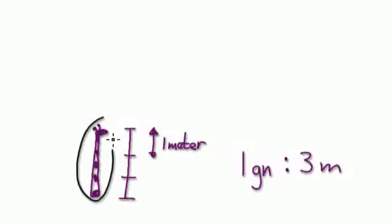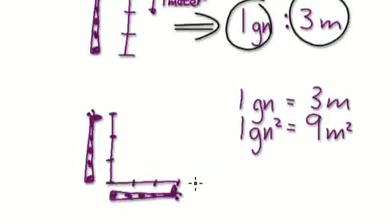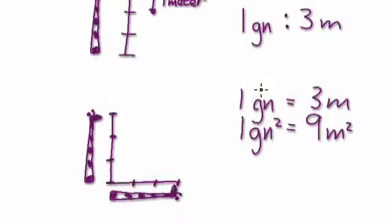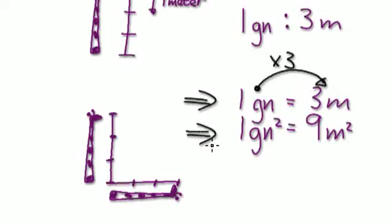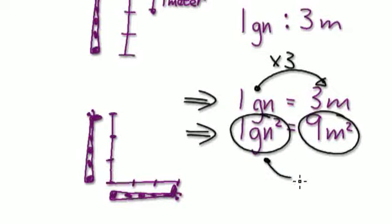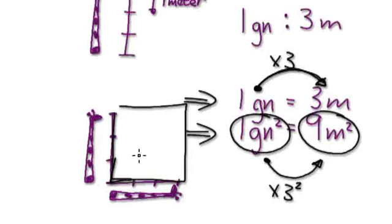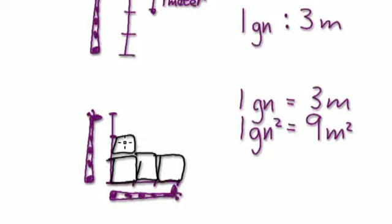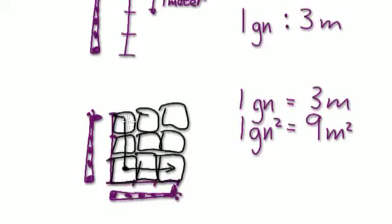In some of the early videos, I gave you a silly example where one giraffe neck equals three meters. Now, one giraffe neck here equals three meters. This here is a length. But when we come to look at the area, if you're looking at the length from here to here, you would times by three because one giraffe neck equals three meters. When you come to look at the area, this here is a length, and this here is an area. When you look at an area, one giraffe neck squared equals nine meters squared.